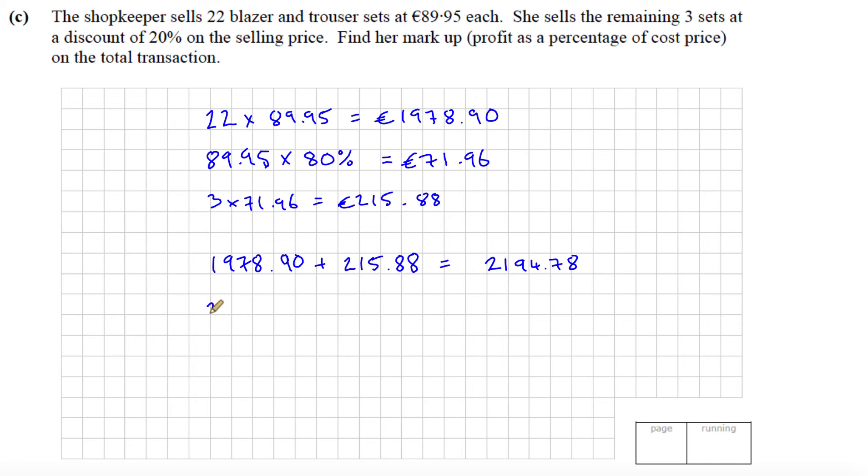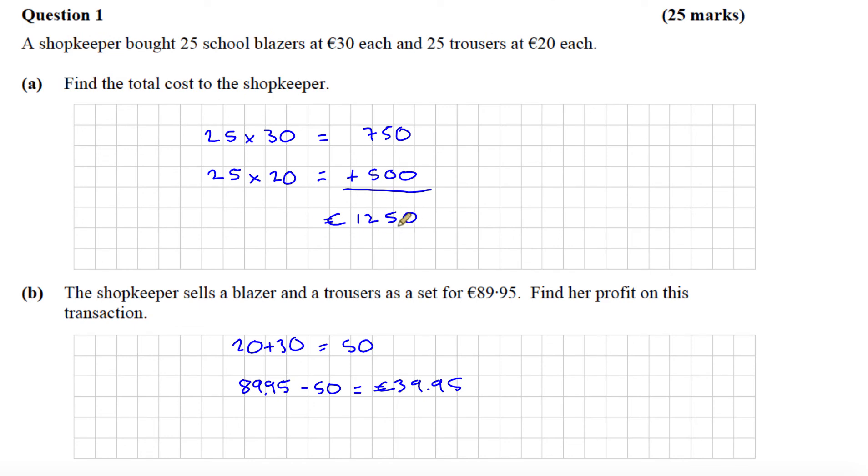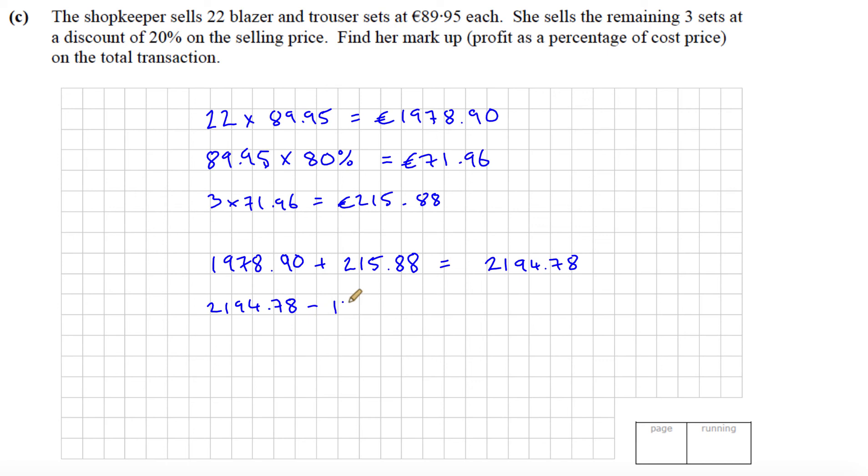Her profit will be 2194.78 minus the cost. Her cost, if you remember from part A, was 1250. So her profit is 944.78.